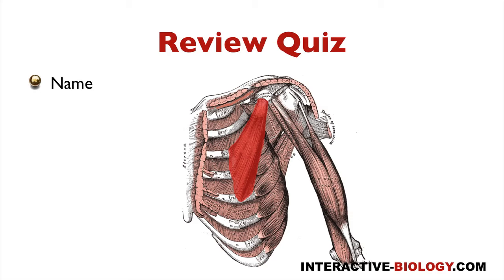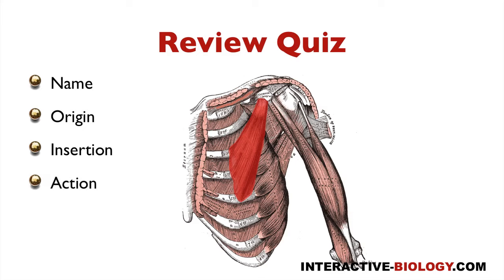What is the name of this muscle? This is pectoralis minor. The origin would be the anterior surface of ribs 3, 4, and 5 near the costal cartilages. The insertion point would be the medial aspect of the coracoid process of the scapula. And its action, it helps to stabilize the scapula by pulling it inferiorly and anteriorly against the thoracic wall.